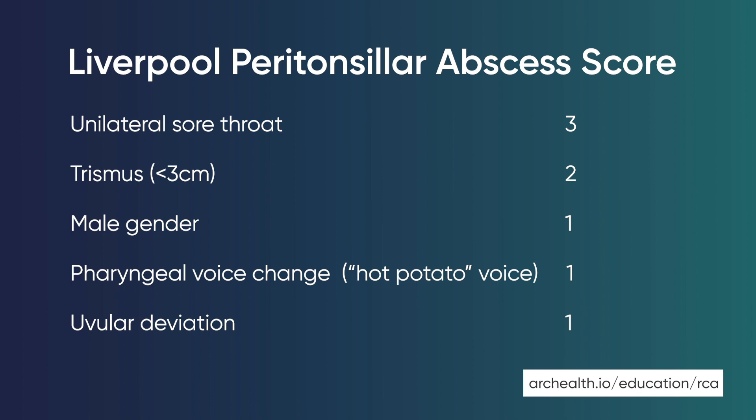We all worry about the possibility of missing a Quinsy in patients presenting with a sore throat. Quinsy's often develop following bacterial tonsillitis and are more common in males who smoke and who present with unilateral symptoms. To give you some additional confidence in assessing these patients, you can use a Liverpool peritonsillar abscess score to calculate the probability of this being a Quinsy. A score of 0-3 has a negative predictive value of 98%, which is really reassuring that these patients are unlikely to benefit from a referral to ENT.